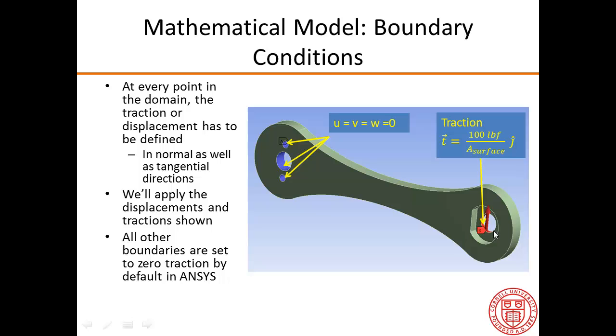This hole that's highlighted in red, we are going to apply a force. And so the equivalent traction is the force of 100 pounds divided by the surface area of that hole. All other boundaries are set to 0 traction by default in ANSYS.